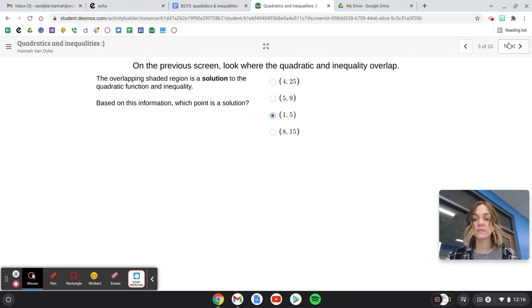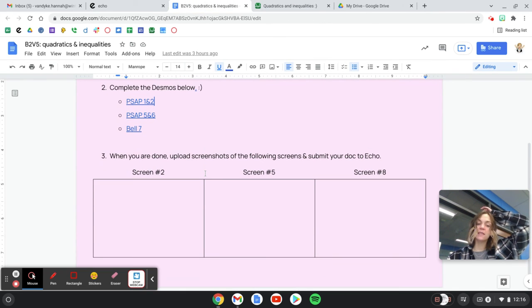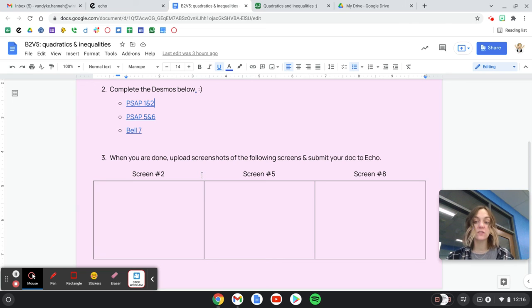You have two problems that are similar to this. It's the same process you're going to go through. Now, in order to get credit for this, you need to take screenshots of specific screens. I need a screenshot of screen 2, screen 5, and screen 8. You're going to put them in the box here and then upload that to Echo.